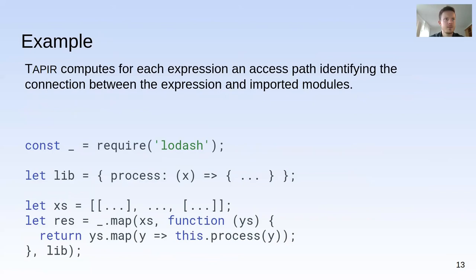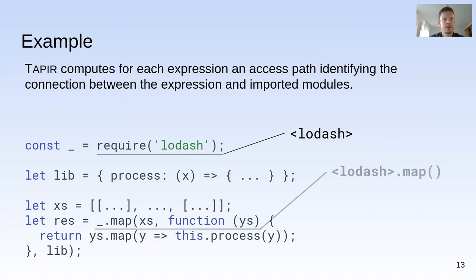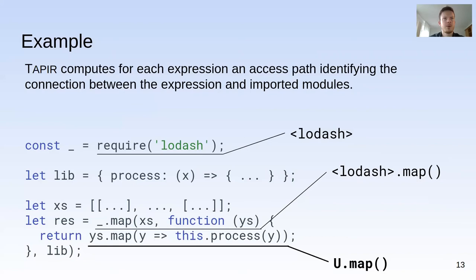I will not describe these phases in detail, but instead show the result on this small program. This expression loads the lodash module and is therefore assigned an access part that represents the lodash module object. This expression is a read and call of the map property on the lodash object, so it is assigned an access part representing the call to the lodash map function. Finally, this expression calls map on some object ys; Tapir is not able to identify the origin of the value stored in ys, so it conservatively assigns an access part representing the call to map on some unknown object.